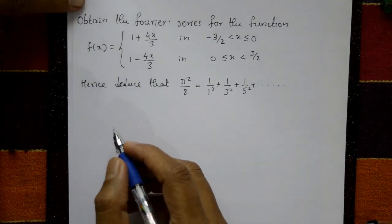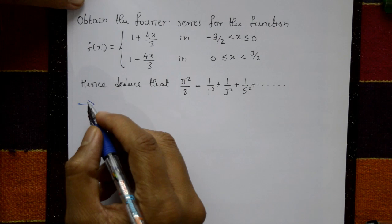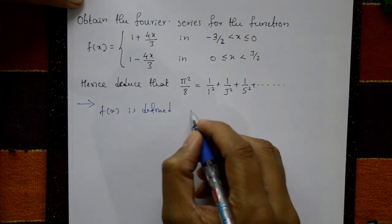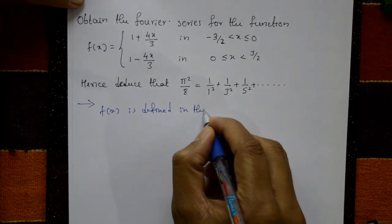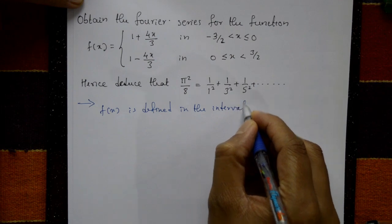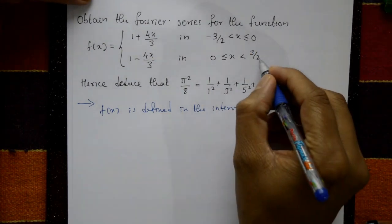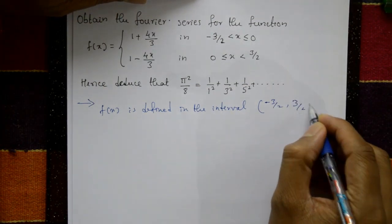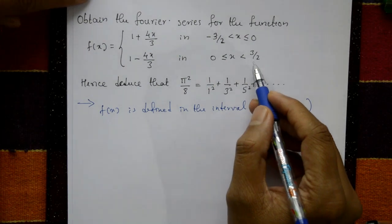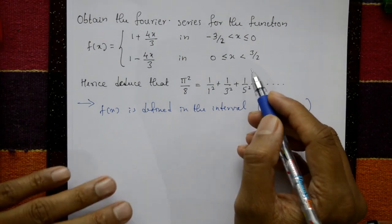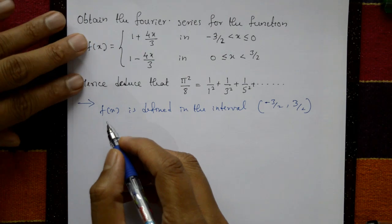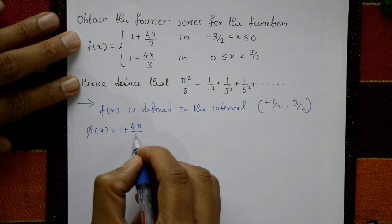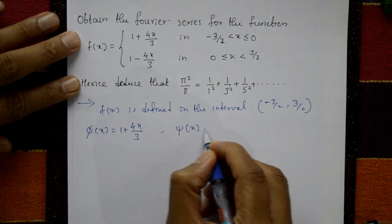Solution: f(x) is defined in the interval -3/2 to +3/2. Now check even or odd function. φ(x) = 1 + 4x/3 and ψ(x) = 1 - 4x/3 are both parts of f(x).